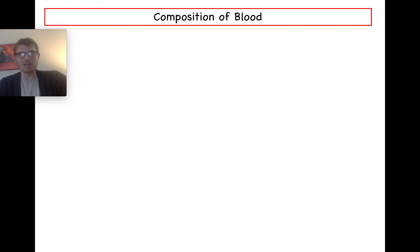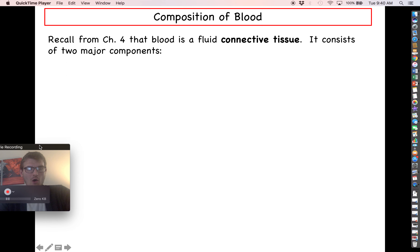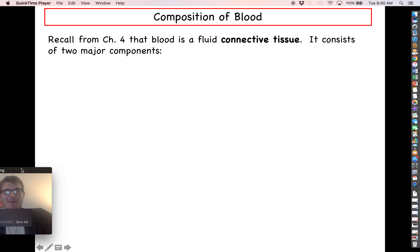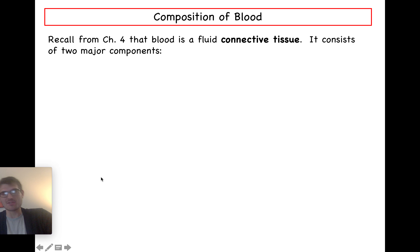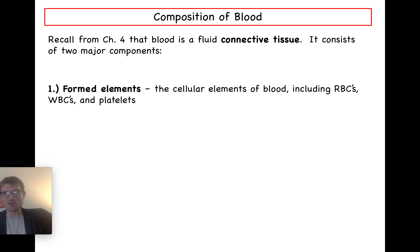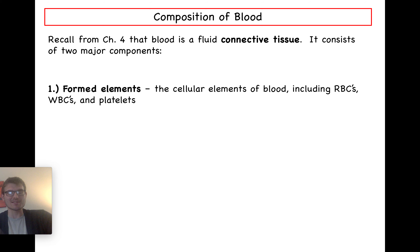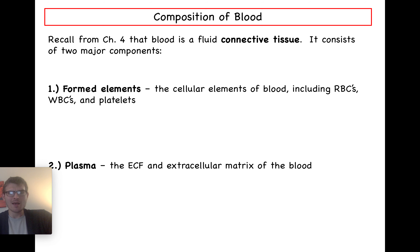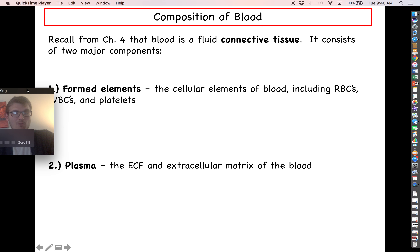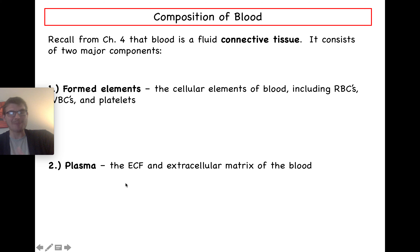Let's talk about the composition of blood. Recalling back to chapter 4, blood is a type of connective tissue — specifically a fluid connective tissue. It consists of two major components. Number one are the formed elements: all the different types of cells suspended within the blood, including red blood cells, white blood cells, and platelets. Number two is blood plasma, which is the actual fluid portion of the blood — the extracellular fluid and extracellular matrix for those formed element cells.